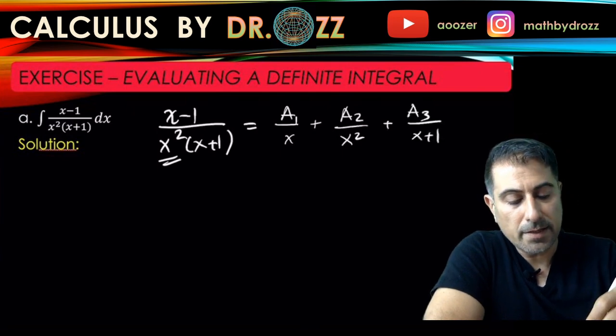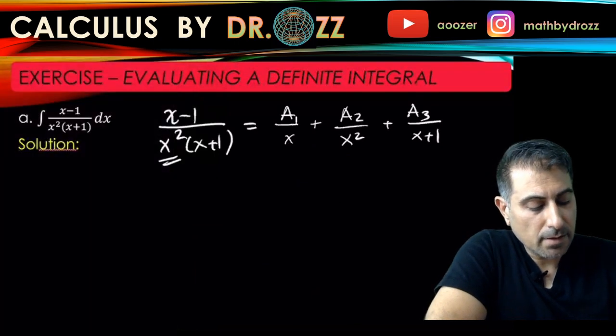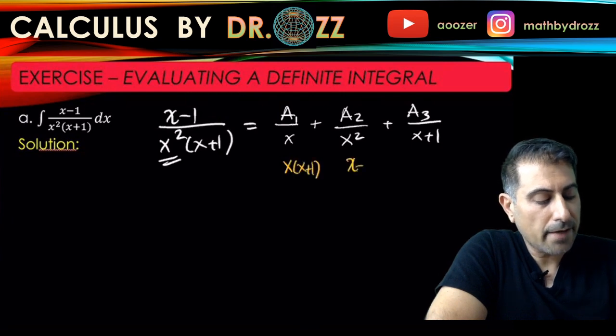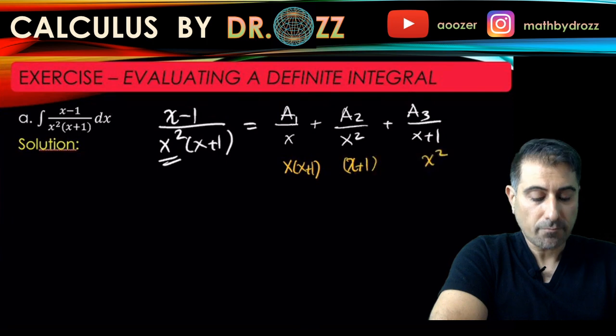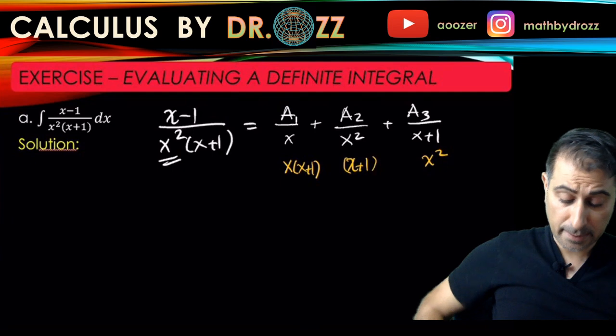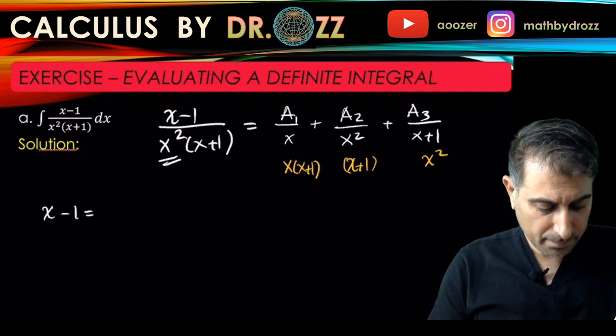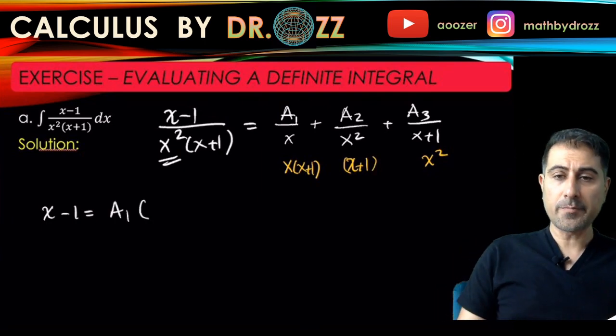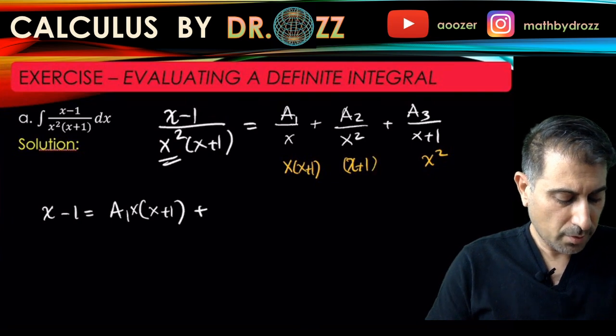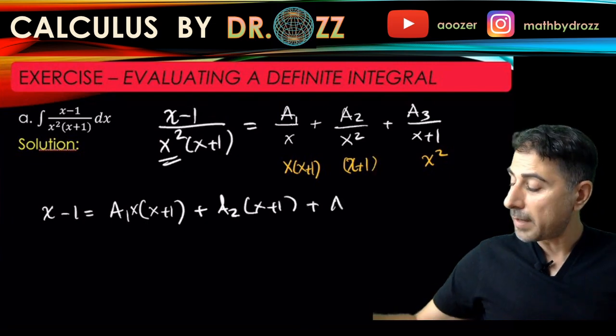Let's go back here. I have x minus 1 divided by x squared x plus 1 to be written as—don't take this as a quadratic, because that's a very common mistake. When it's a quadratic, you have to have a linear factor at the top in the partial fraction, but it's a linear factor raised to the power of 2. So I'm going to write it as A1 over x plus A2 over x squared. That takes care of the factor x squared. And then for the linear factor, I'm going to put A3 over x plus 1.